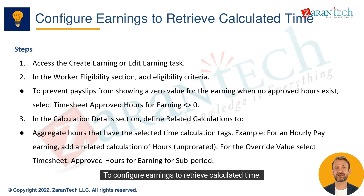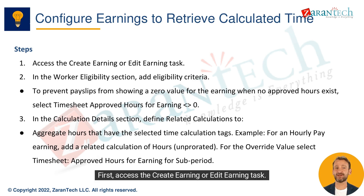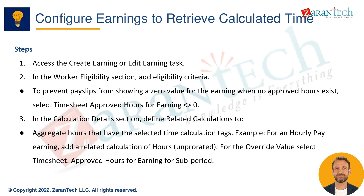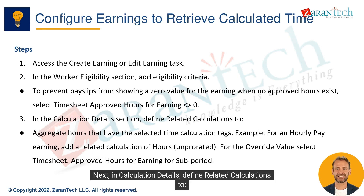To configure earnings to retrieve calculated time, first access the create earning or edit earning task. Then in the worker eligibility section, add eligibility criteria. To prevent zero pay when no approved hours exist, select timesheet approved hours for earning zero. Next, in calculation details, define related calculations to aggregate hours with selected time calculation tags.